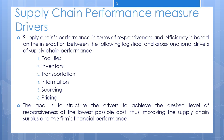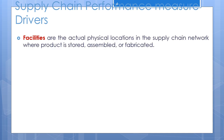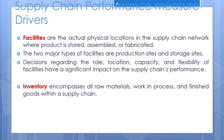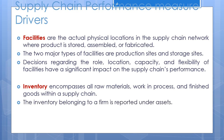This covers facilities, which is one of the important performance measure drivers in supply chain management. Next, we'll discuss the second supply chain performance driver: inventory. Inventory exists in the supply chain because of a mismatch between supply and demand. This mismatch is often intentional — it is economical for manufacturers to produce in large lots that are then stored for future sales.